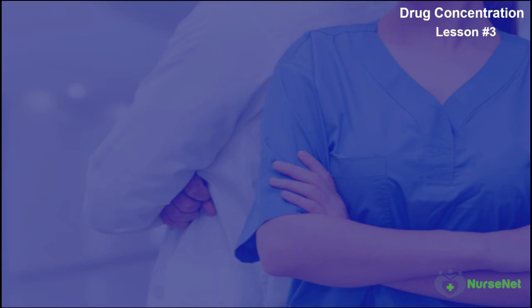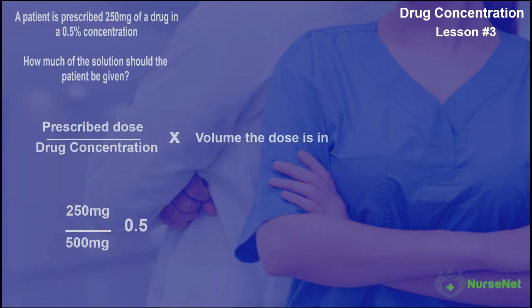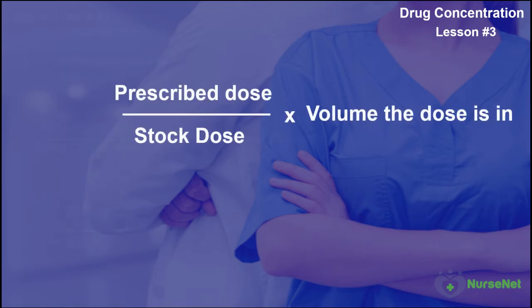Welcome back to NurseNet Numeracy, the free-to-use online maths tutorial course designed for nurses. In our previous lesson, we looked at how to calculate how much of a solution we should give to a patient if they were prescribed a drug and we knew the stock dose of that drug in a solution using the following formula: prescribed dose divided by the stock dose, multiplied by the volume of the solution the stock dose is in.